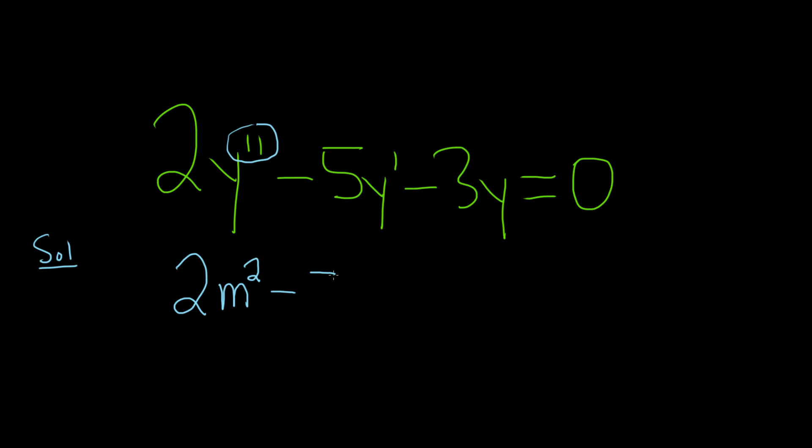And then minus 5m, and then it's the first derivative. So it's the first power. And then minus 3. So you can think of y as the 0 derivative, if you like. So that would be m to the 0, so it goes away, because m to the 0 is 1. So you don't write it when there's a y. Just write the number. And that's equal to 0.